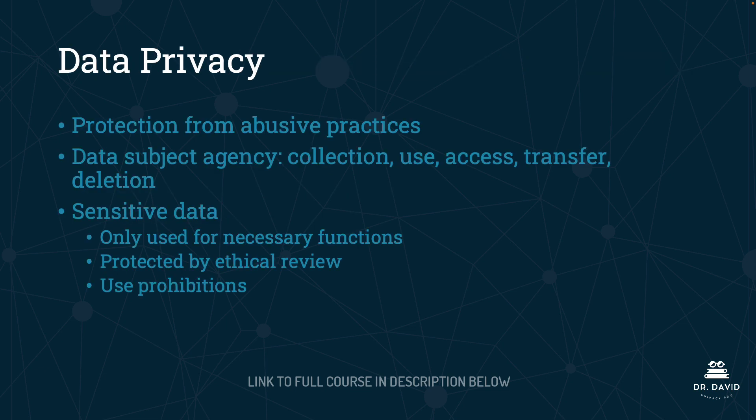The third principle is data privacy. This advocates for protection from abusive practices. We want to make sure the data subject is able to exercise agency over the collection, use, access, transfer, and deletion of their data. The data subject is a term of art referring to the individual from whom we are collecting data. When sensitive data is used to train a model or as input for a live model, we should only use it when necessary for the particular business function, protected by ethical review, and with use prohibitions — meaning purpose specification, data minimization, and use limitation. We tell individuals what we're collecting, why, and we only use it for the stated purpose, not for secondary purposes.